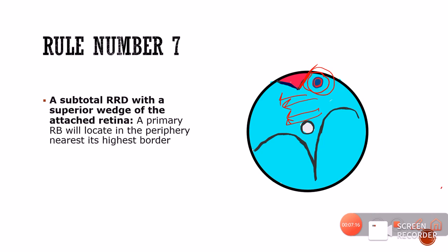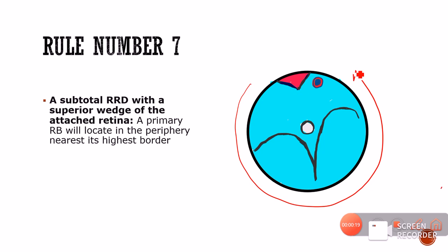Rule number seven: in a subtotal rhegmatogenous RD where just a superior wedge of attached retina remains and there is also a bullous configuration, the primary retinal break will be located at the periphery near the highest border. It will always be superior because of the bullous nature, and it will be toward the highest border.